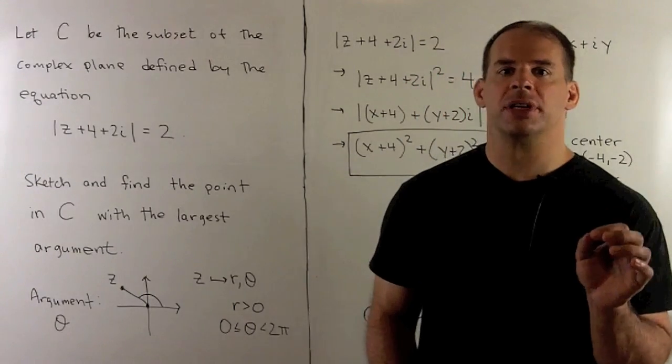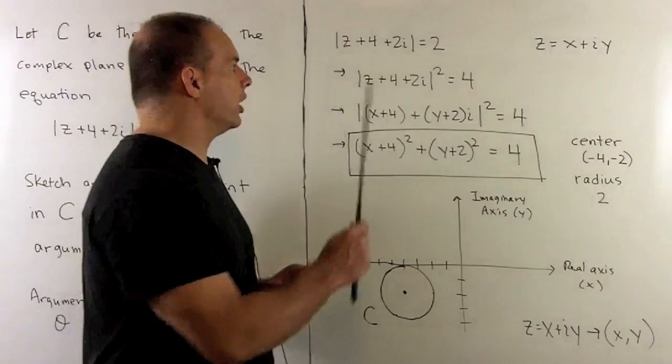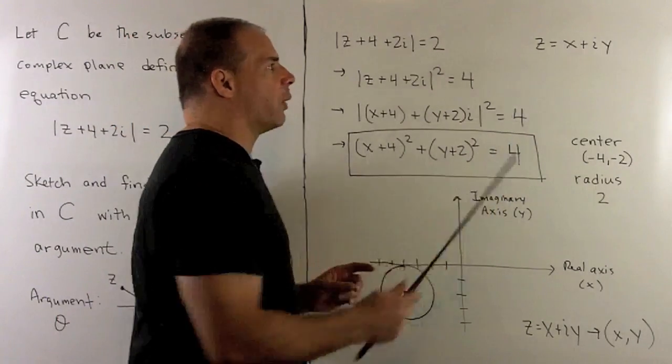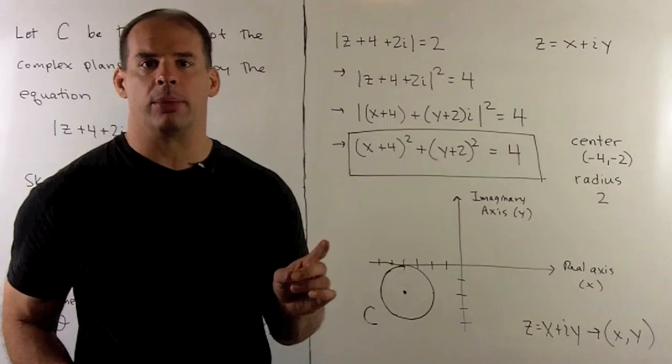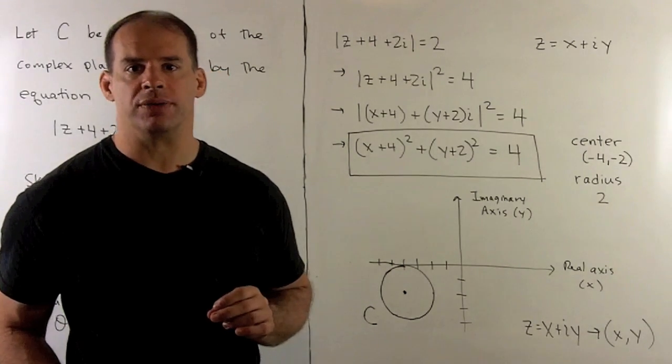Let's first sketch the graph of C. We'll take our equation. I can represent z as x plus i y, where x and y are real numbers. x is the real part of z, y is the imaginary part of z.